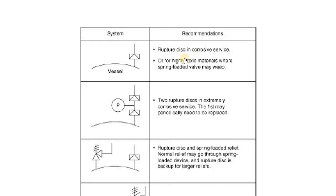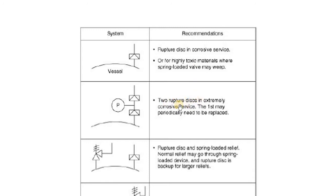Looking at installation examples: for a rupture disc in a corrosive service, consider using a rupture disc rather than a spring-loaded valve where the spring could be damaged by corrosive material. We also use rupture discs for highly toxic materials where a spring-loaded valve may weep, preventing the toxic material from weeping through the spring-loaded valve.